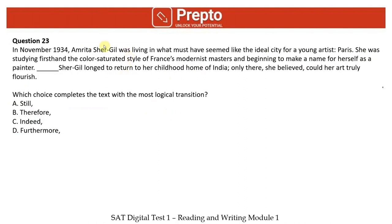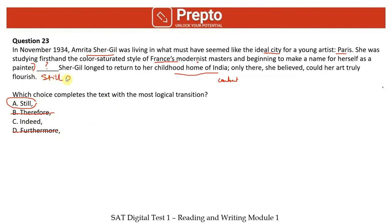Next logical transition question: In November 1934, Amrita Shergill was living in Paris — ideal for a young artist. She was studying firsthand the color-saturated style of France's modernist masters and making a name for herself. The blank introduces the next sentence: Shergill longed to return to her childhood home in India. Despite everything going well in Paris, she still longed to return — so we need a contrast word. 'Therefore' and 'furthermore' continue the flow; 'still' introduces contrast. Answer is option A: 'Still.'